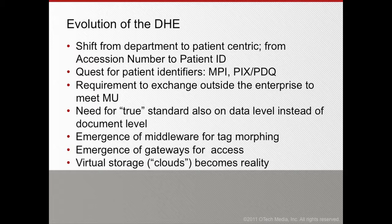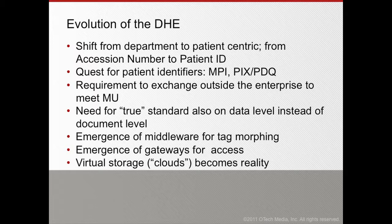Another evolution is the need for a true standard — not only at the document level, where we can exchange documents between different enterprises using the CCD or CDA, but also at the data level, so we can really query and access enterprise systems and get the data we need. We also see an emergence of middleware used for what we call tag morphing — changing information in the header or metadata to facilitate certain workflows, display characteristics, or system connectivity.